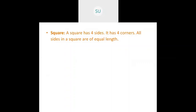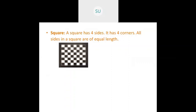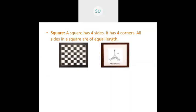A square has four sides, and all sides are the same length. It also has four corners. Examples of squares include a chess board and a wooden frame.